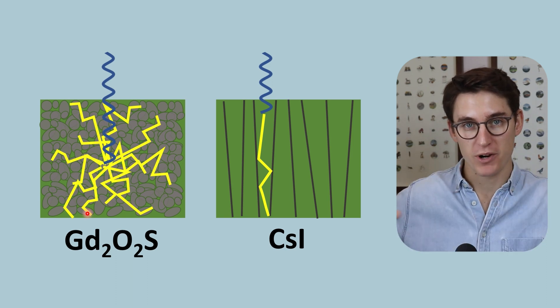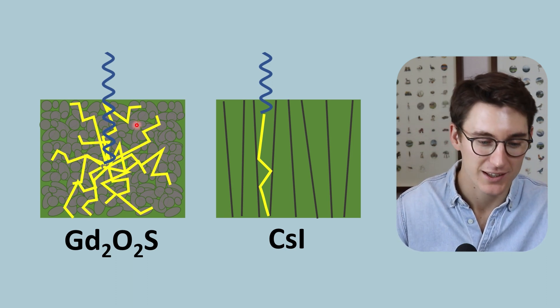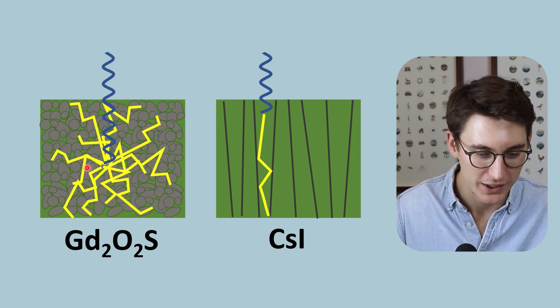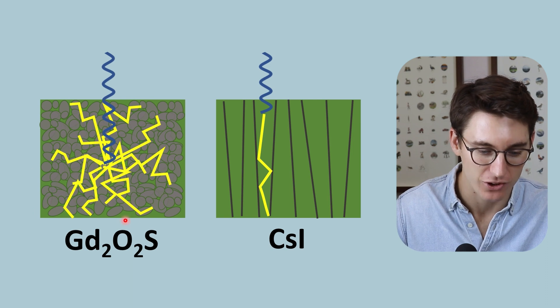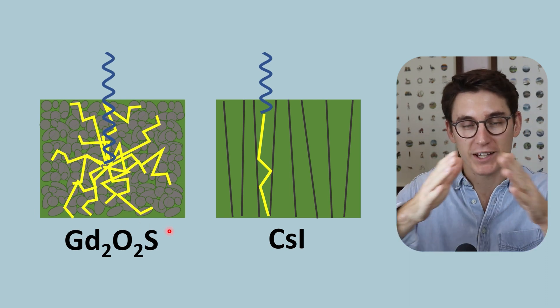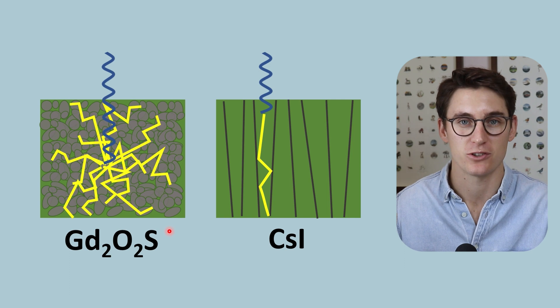Multiple light photons that spread out as they travel through the intensifying screen. We can see the lateral spread that occurs here of these light photons, and we get a reduction in our spatial resolution.